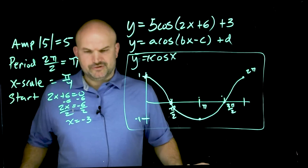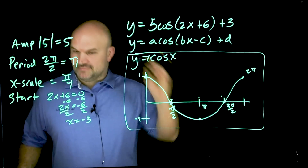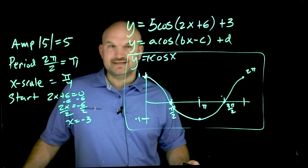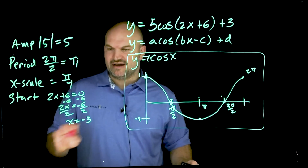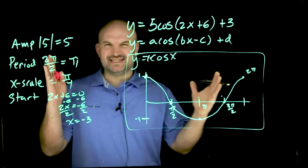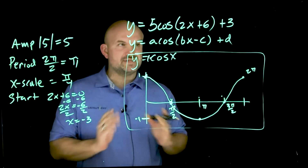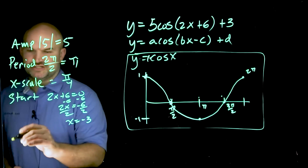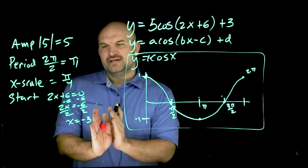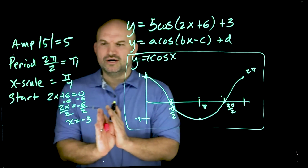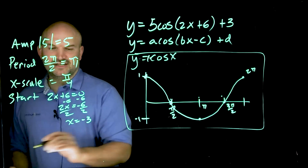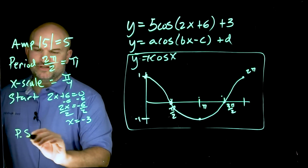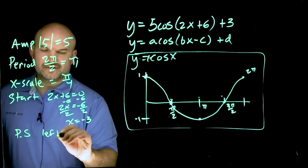We got a negative three, so we'll work with it. I want to make sure I identify my start and my period — that's basically everything to do with my horizontal shifts. You could also think of this as your phase shift. If you have a phase shift, that's going to be negative three, so this would be a phase shift of left three.